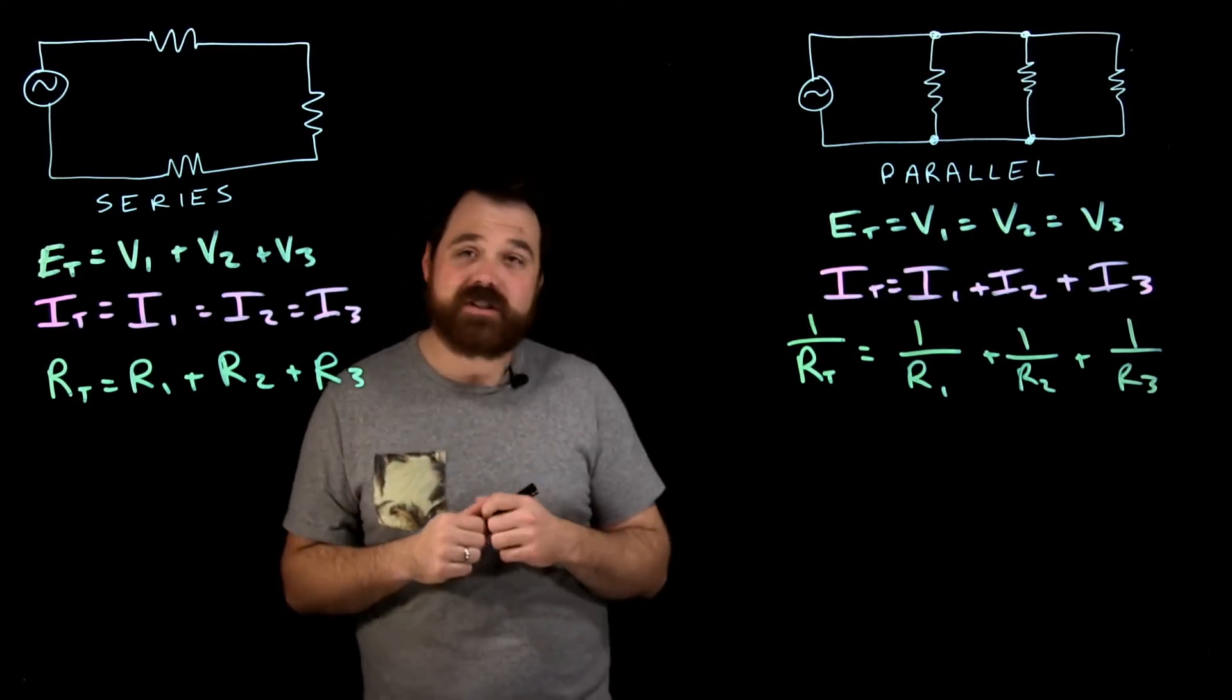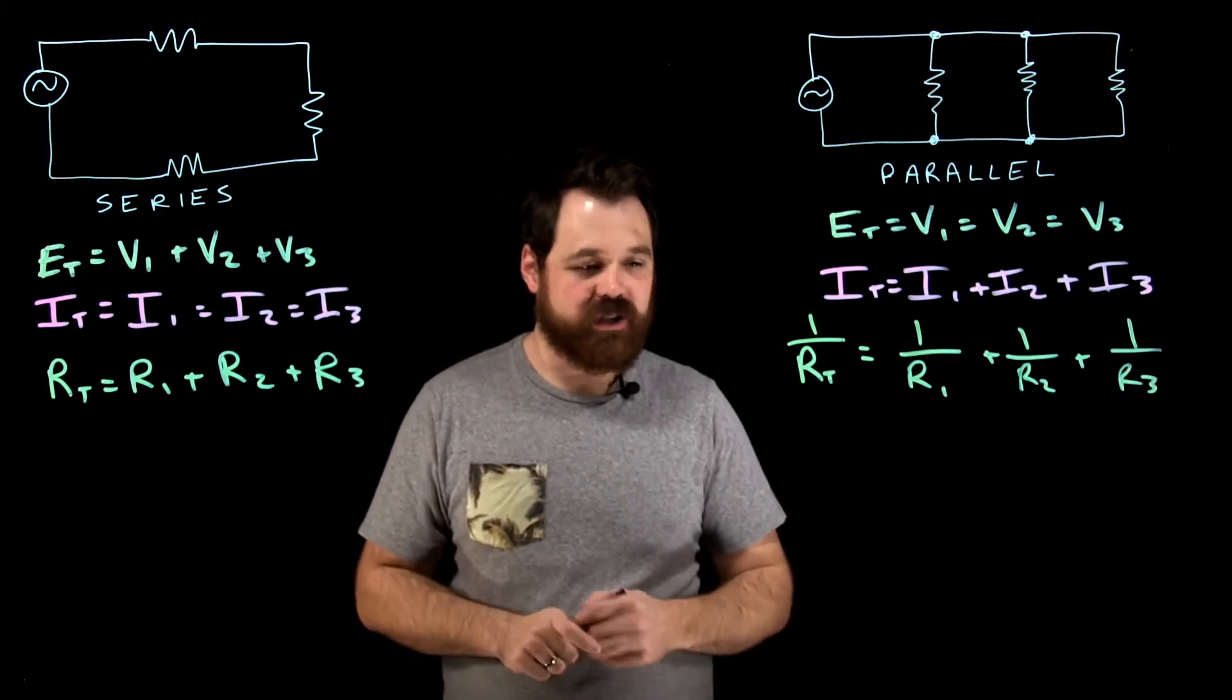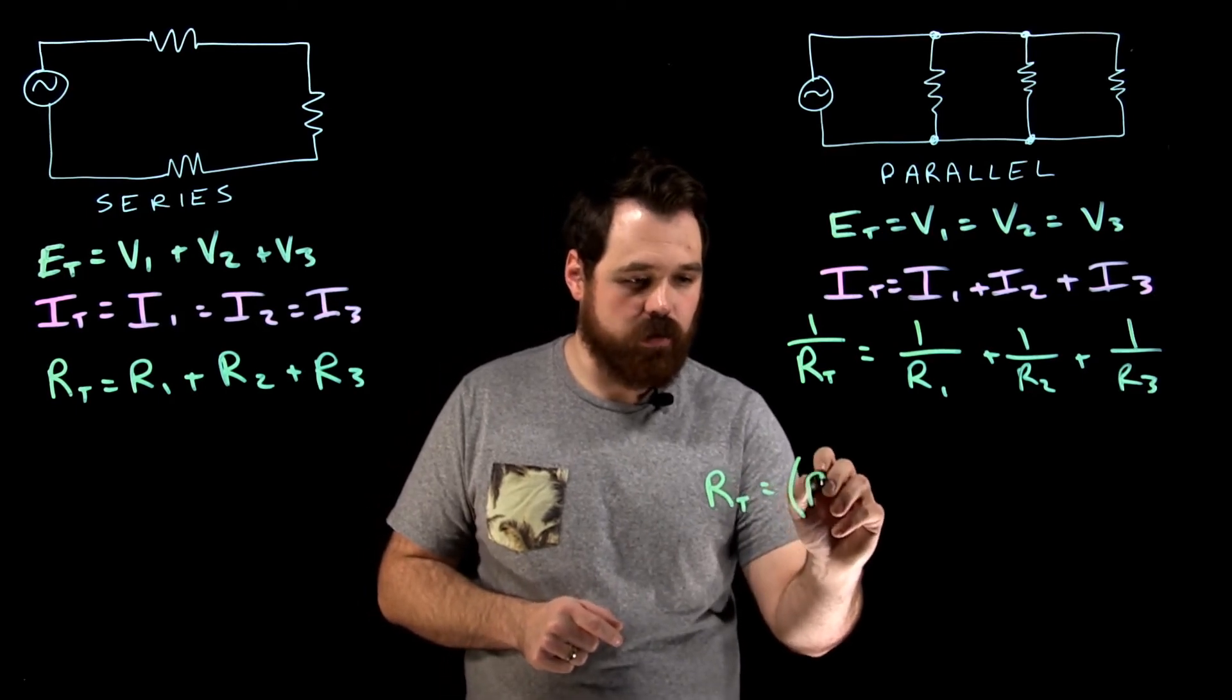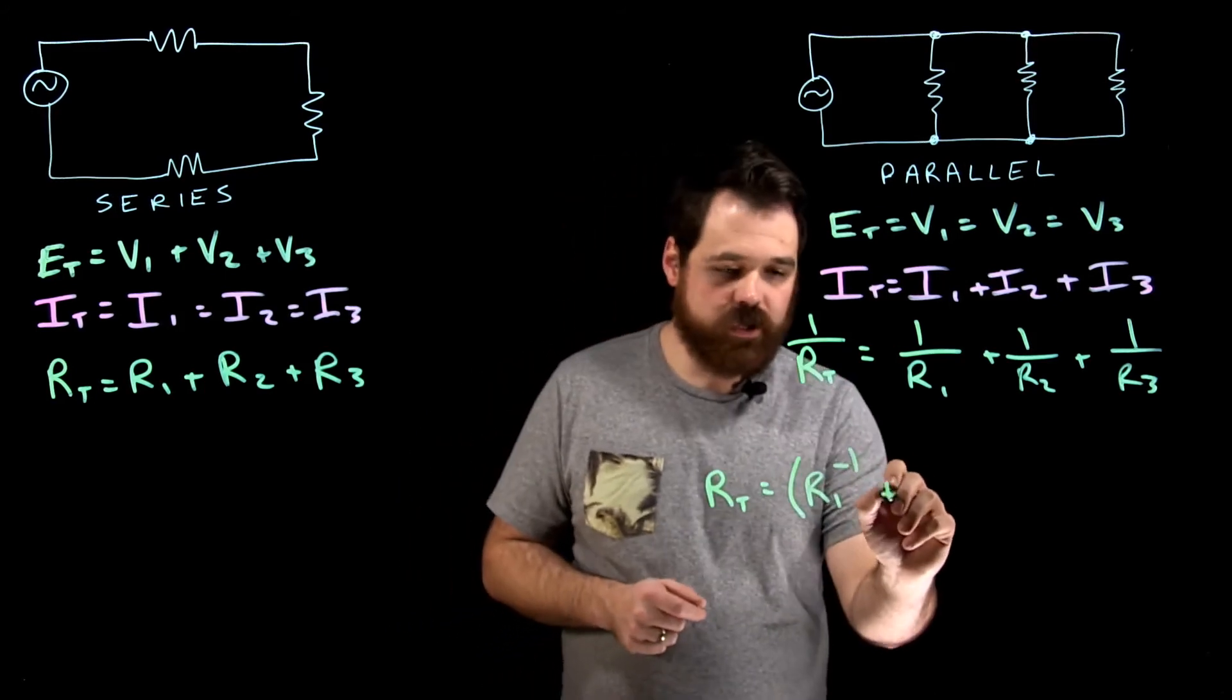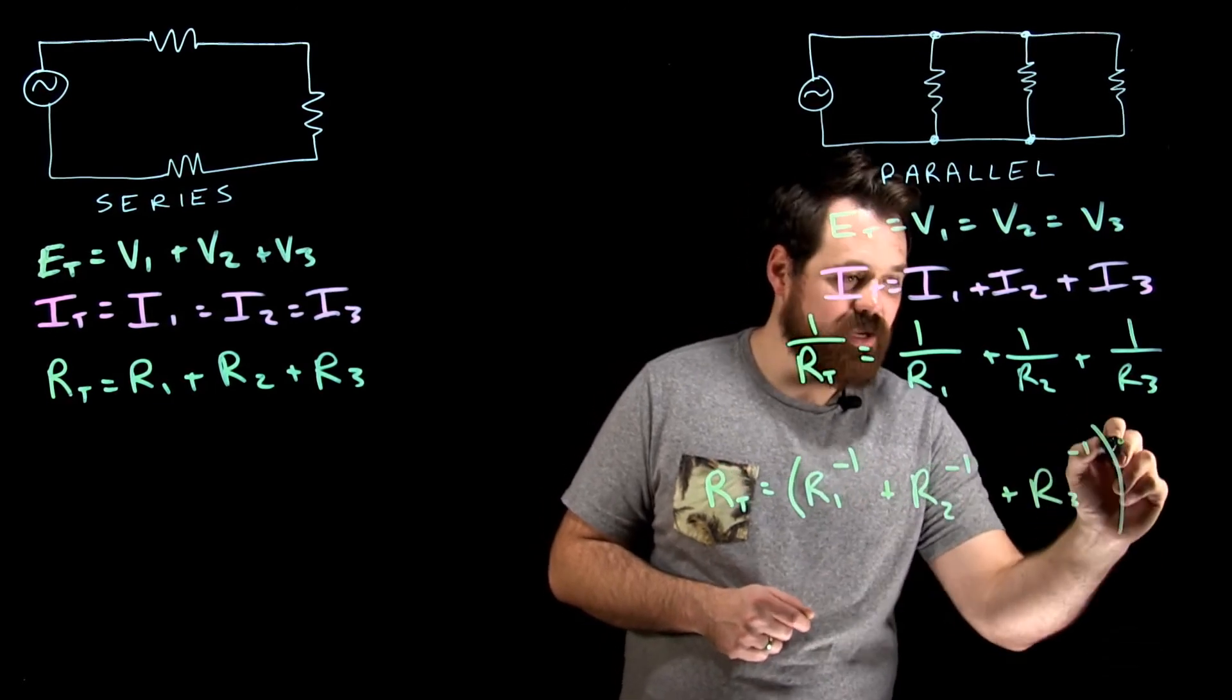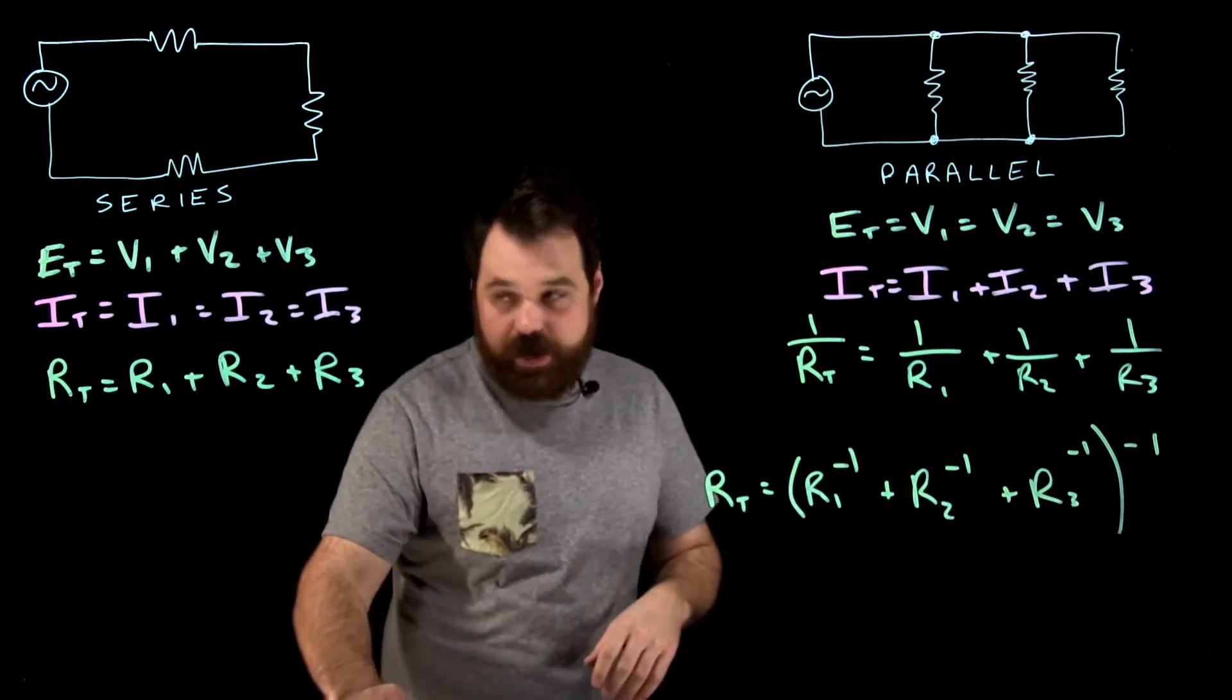My preference for writing that out, because I like to write it as I would type it into my calculator, is RT equals, in brackets, R1 inverse plus R2 inverse plus R3 inverse, then inverse that whole calculation. That's how I would go about doing that.